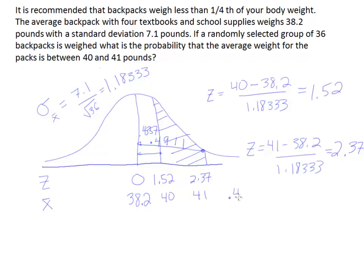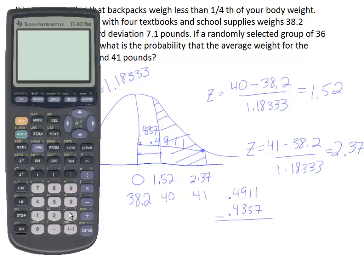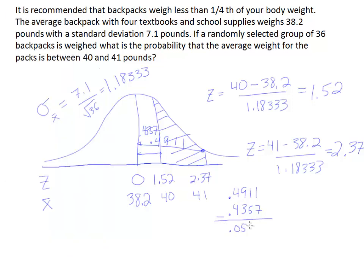So let's just do that quickly. 0.4911 minus 0.4357. So I'll have 0.4911 minus 0.4357. And that produces the answer 0.0554. So that's our solution. We have about a 5.5% chance that the backpacks on average will weigh between 40 and 41 pounds. So that's it.